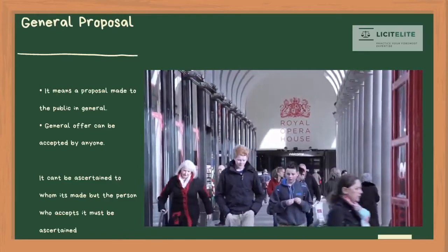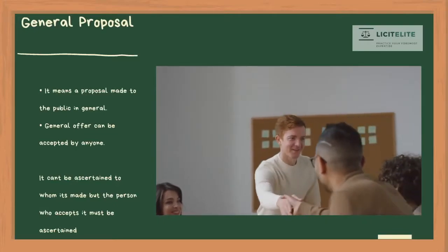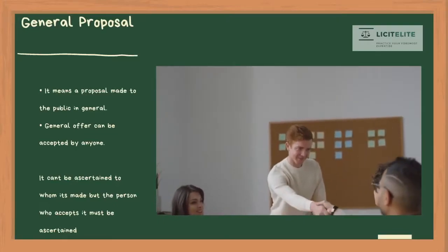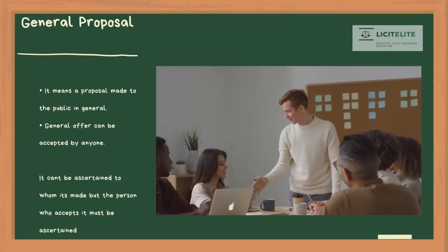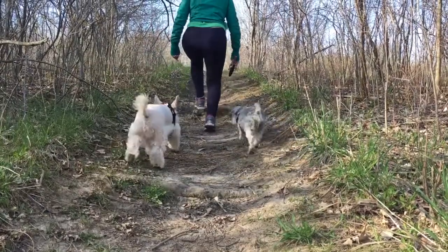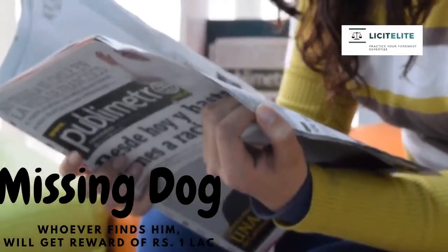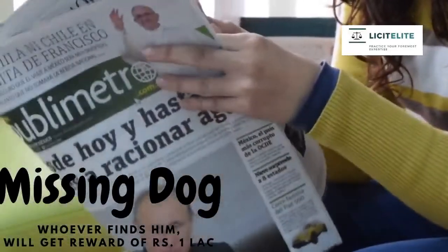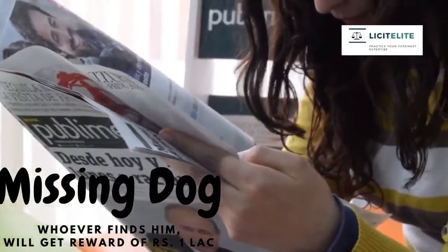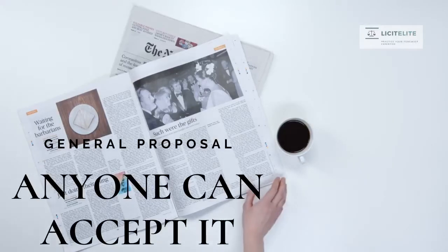Fourth, general proposal. It means a proposal made to the public in general. A general offer or general proposal can be accepted by anyone. It cannot be ascertained to whom it is made, but the person who accepts it must be ascertained. For example, A's dog is missing, so A publishes an ad in a newspaper that whoever finds his dog will get Rs 1,000,000. This is a proposal made to the world at large and anyone can accept it. Therefore, it is a general proposal.